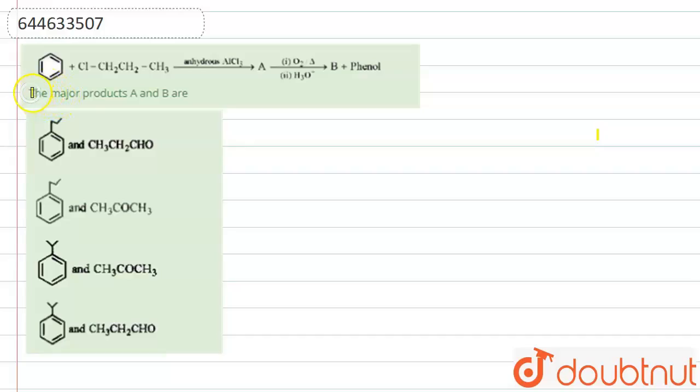We have to determine the major products A and B in the following reaction. So let us check the mechanism of this reaction. Firstly, it is given that CH3-CH2-CH2-Cl is the reagent along with anhydrous AlCl3.